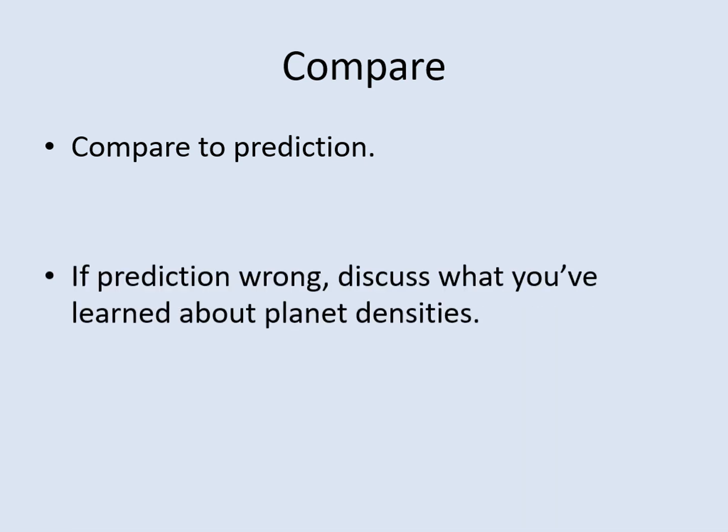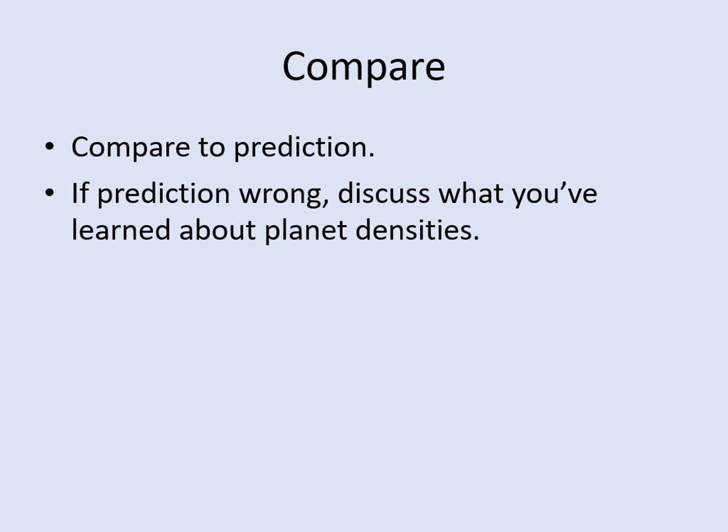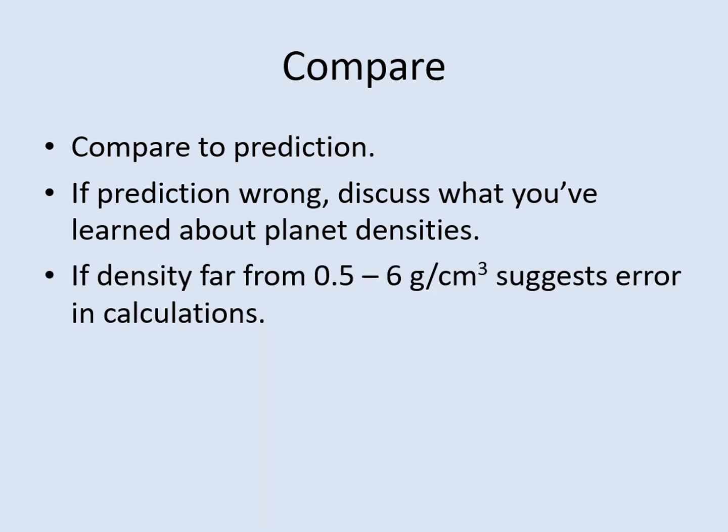Once again, you should look over your results and decide if your answers make sense and if they match your predictions. It's not unusual for students to be surprised by the results of their calculations, so if you learn something new about where different types of planets are located in your mystery solar system, then you should say that here. Note that if your answers are well outside of the range 0.5 to 6 grams per cubic centimeter, then it's probably telling you there's a mistake in the calculation. You should check your calculation steps, and if you're stuck, feel free to ask for help. If it's too late to ask, make sure you at least explain why you think there's a problem with the answer.